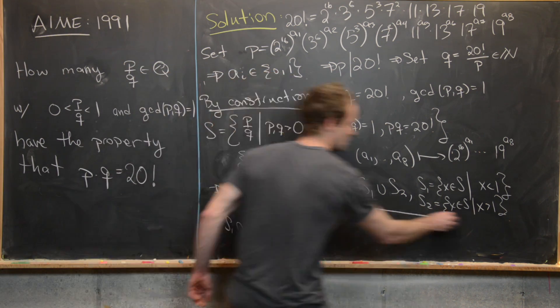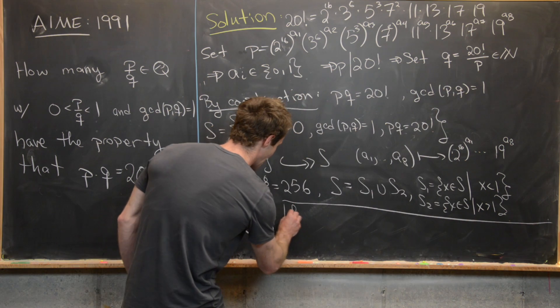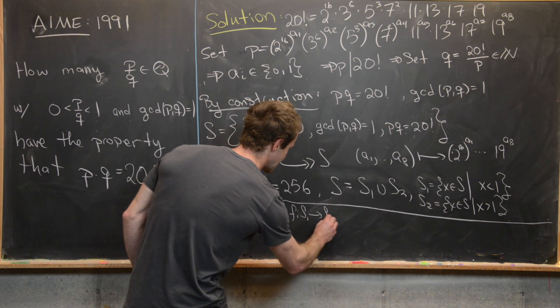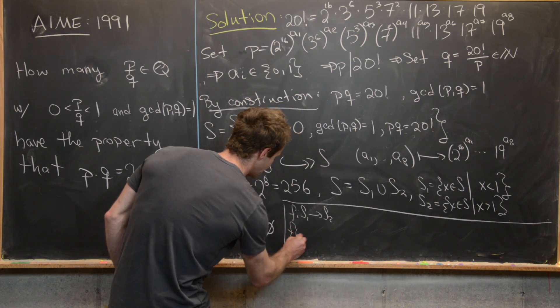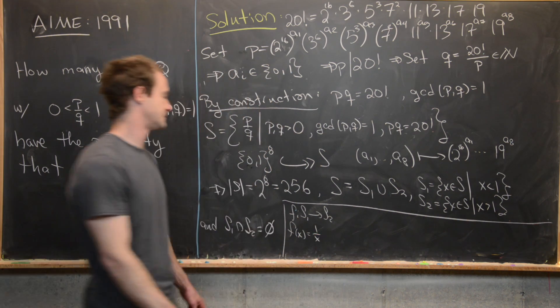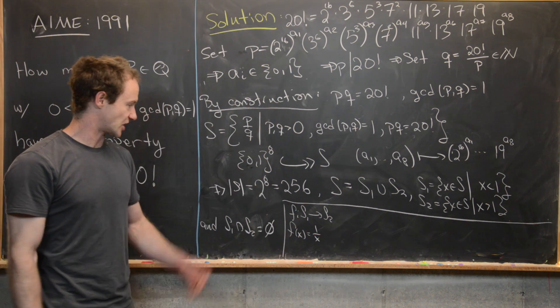Now, furthermore, we can define the map F from S1 to S2 by F of X equals 1 over X, and check that this is a bijection.